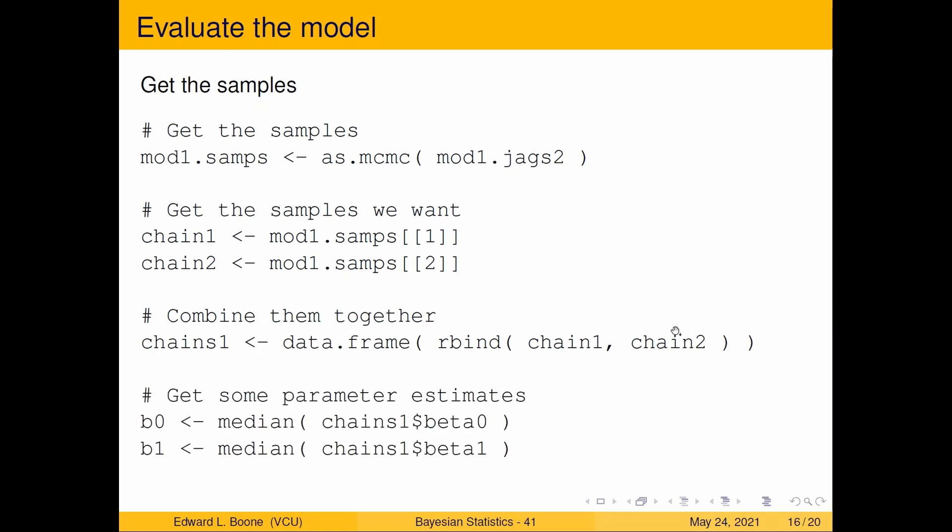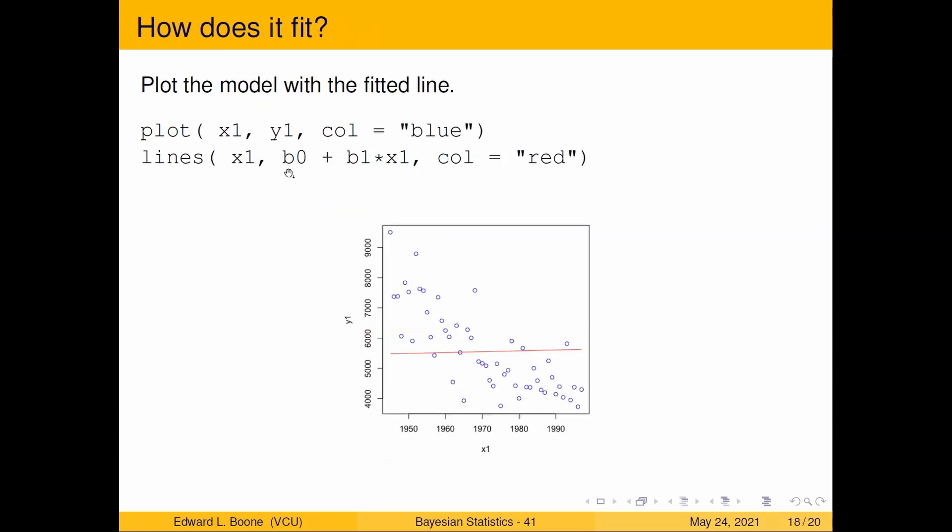Now that we have it in the data frame, we can get some parameter estimates. A parameter estimate for beta zero and a parameter estimate for beta one would just say well maybe I'll use the median: chains one beta zero, chains one beta one. What do I do? I want to plot this to see how it fits. So x1, y1, that's the blue dots, and then I put the line in here b0 plus b1 x1 and the color is red and you can see this line here.